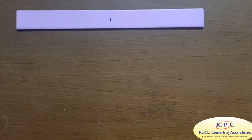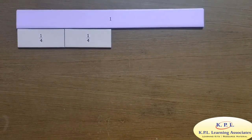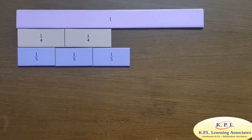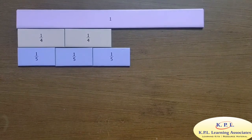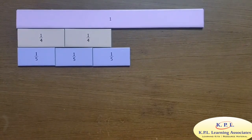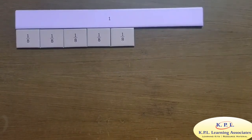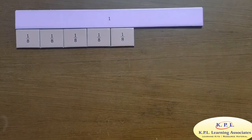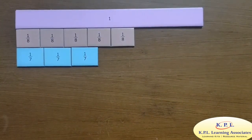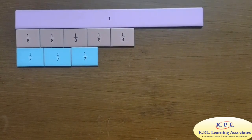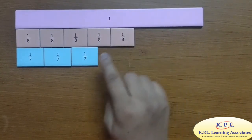Let us compare fractions with different numerators. Here I have two pieces of one fourth, that is two by four, and three pieces of one fifth, that is three fifth. If we compare these two, we can observe that three fifth occupies more area. Therefore, three fifth is greater than two fourth. Let us do one more example. Here I have five pieces of one eighth, that is five by eight, and three pieces of one seventh, that is three by seventh. We observe that five by eight is greater than three seventh.